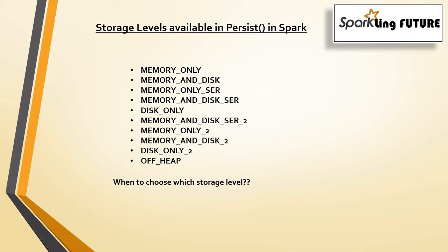Next one is Off Heap. Off Heap is similar to Memory Only Serializer, but the RDDs will be stored in the off-heap memory available in the cluster instead of normal cache memory. These are the various storage levels available in Spark's persist transformation.